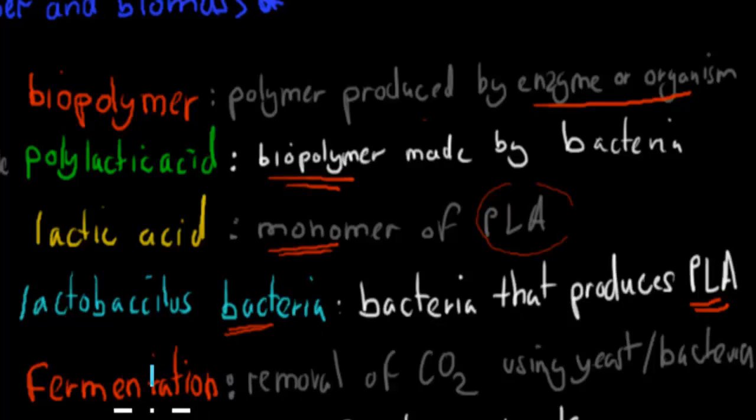We have fermentation. Fermentation is a removal of carbon dioxide using yeast or bacteria, and it's often when we have glucose and produce ethanol, we lose some carbon dioxide in the process, and that's fermentation.